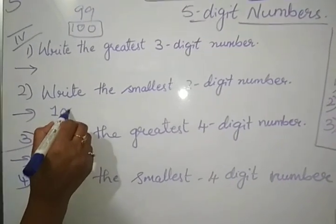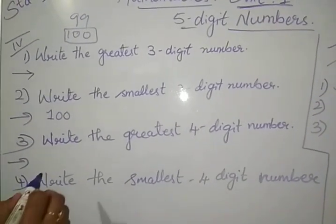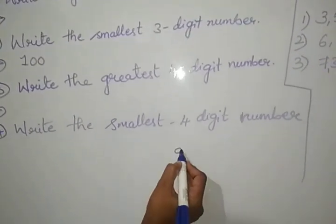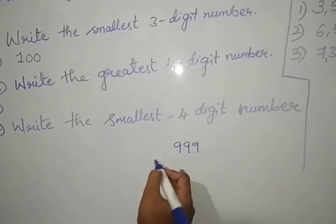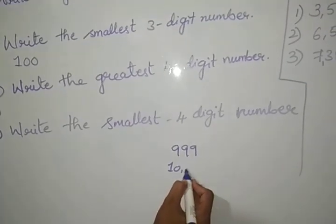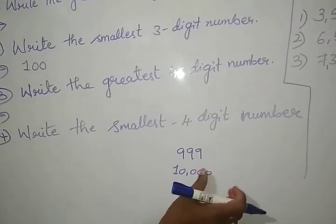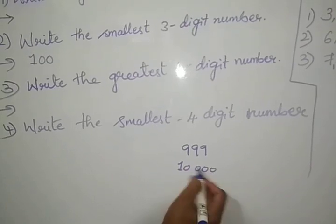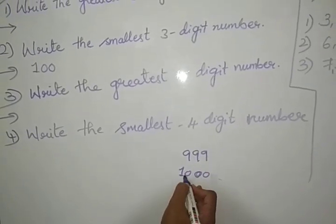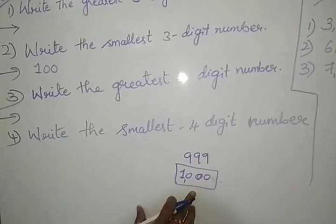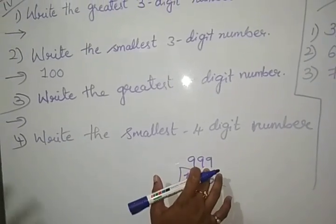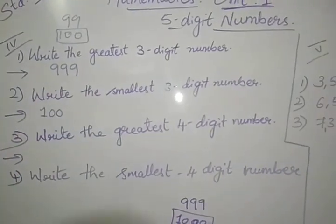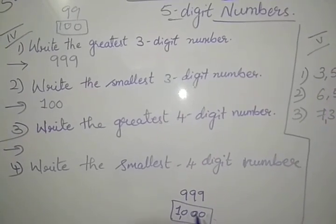Smallest 3-digit number. Greatest 3-digit number means it should be nearer to 4,000. 999, next comes 1,000. This is 4-digit number, smallest 4-digit number. Greatest 3-digit number is 999.